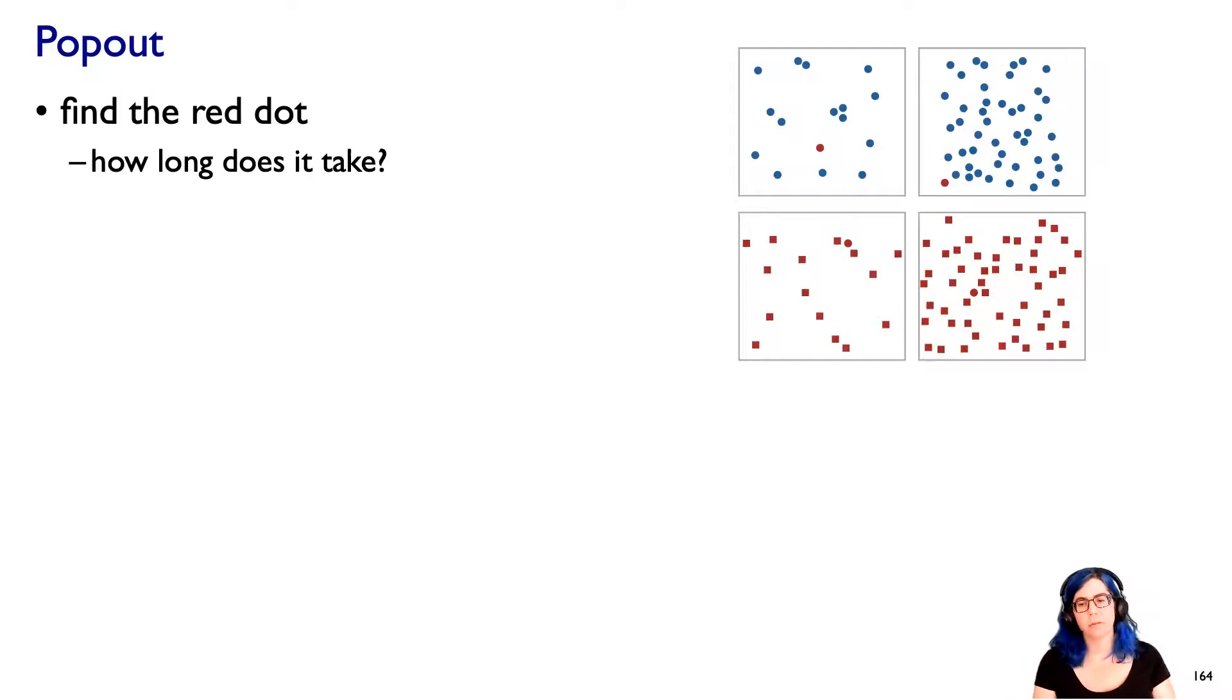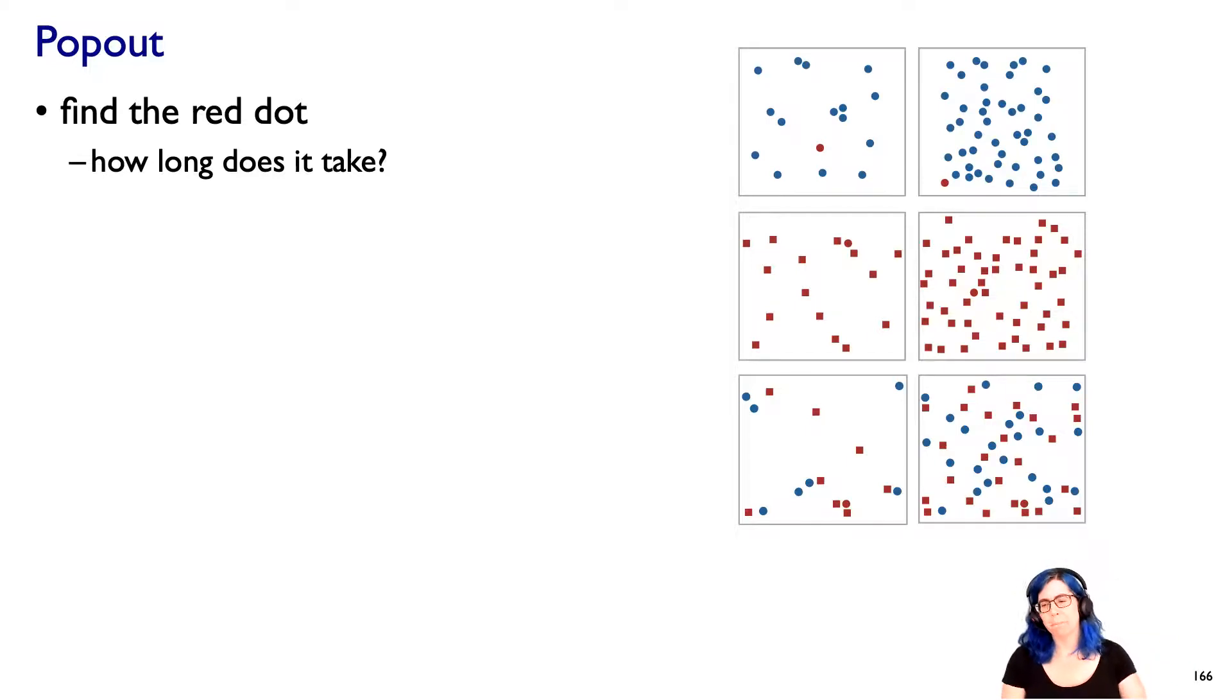One last round. So again, find the red dot. One, two, three, go. Got it. Now I'm sneaky. I have red and blue dots and squares. The last one. One, two, three, go. Got it. Okay. So that last one took me a lot longer. And it's interesting to know, well, why is this the case?